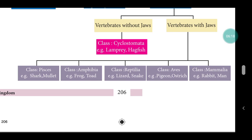Vertebrates with jaws are further classified into: Class Pisces (example: shark), Class Amphibia (example: frog, toad), Class Reptilia (example: lizard, snake), Class Aves (example: pigeon, ostrich), and Class Mammalia (example: rabbit, man).